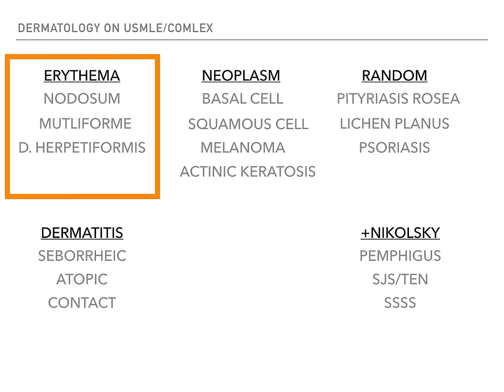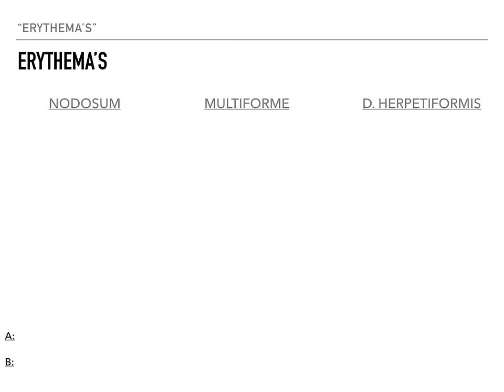The first thing we're going to talk about is the erythema category: erythema nodosum, erythema multiforme, and dermatitis herpetiformis. For all these slides, I'm going to show you pictures, talk about the associations, talk about the buzzwords, talk about the treatment — everything you need to know and nothing more. A is association and B is buzzwords, because that's where the test writers are going to go.